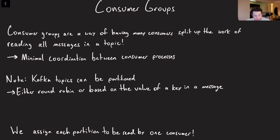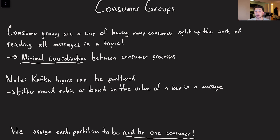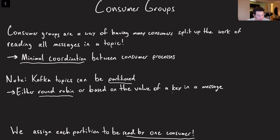On the contrary, in consumer groups, we're attempting to have minimal coordination between each process. The way that we do that is by ensuring that per partition, each partition is only being read by one consumer at a time in the consumer group. That way, if a consumer is assigned to a particular Kafka partition, it doesn't have to contend or compete with any other consumers to read it — it can do so without having to grab any sort of distributed lock. Note that Kafka topics themselves can be partitioned, either round robin or you can set some sort of key per message in a header, and then we'll do partitioning based on the value of that key.